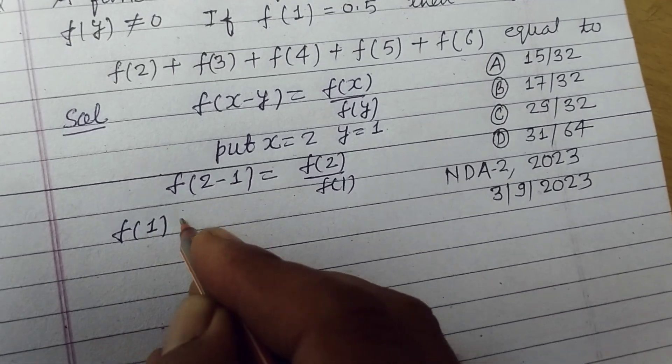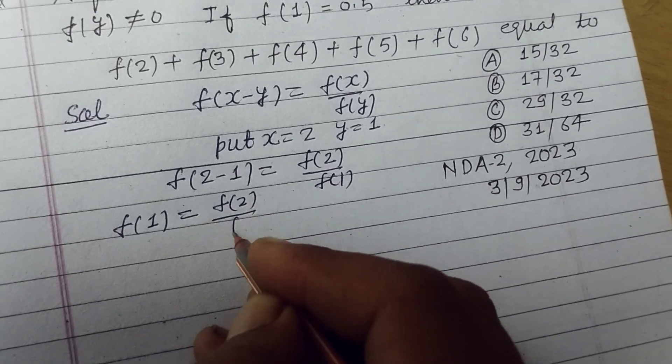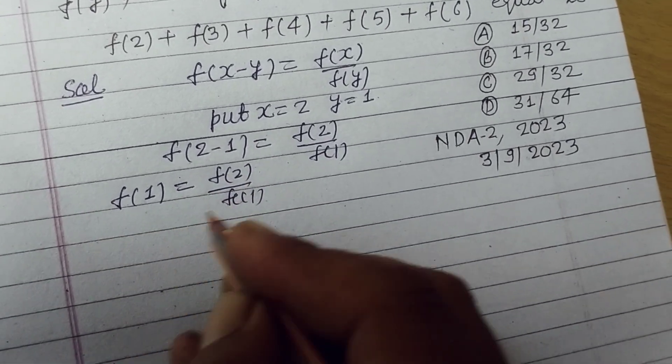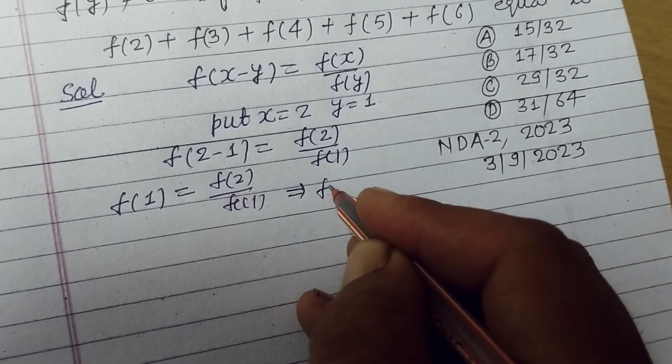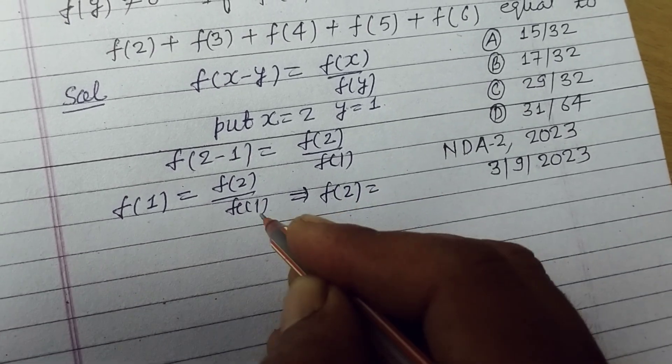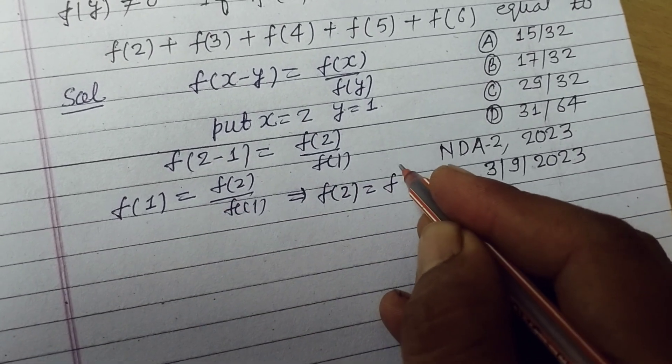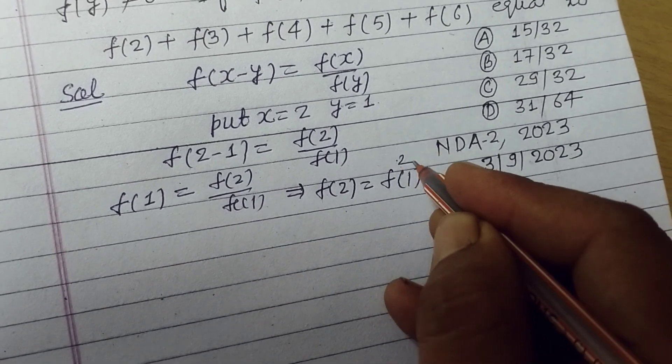2 minus 1 is 1 and f(2) upon f(1). On cross multiplication we got f(2) equal to f(1) into f(1), f(1) square.